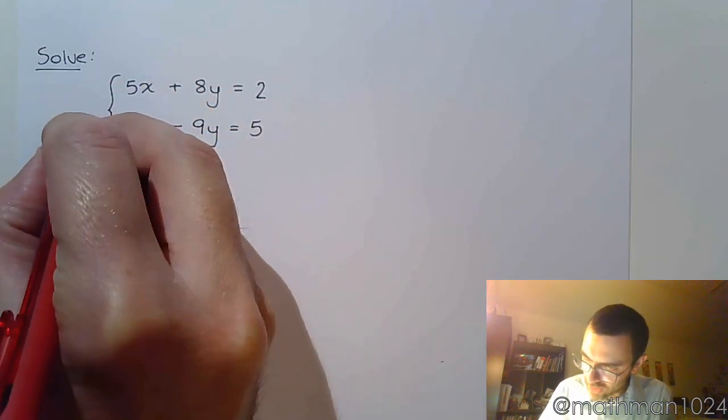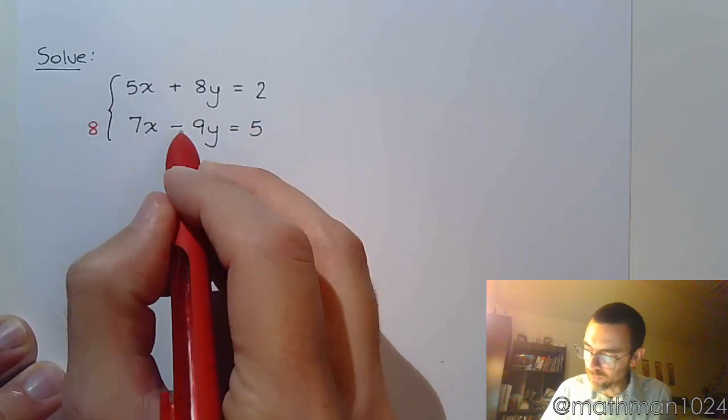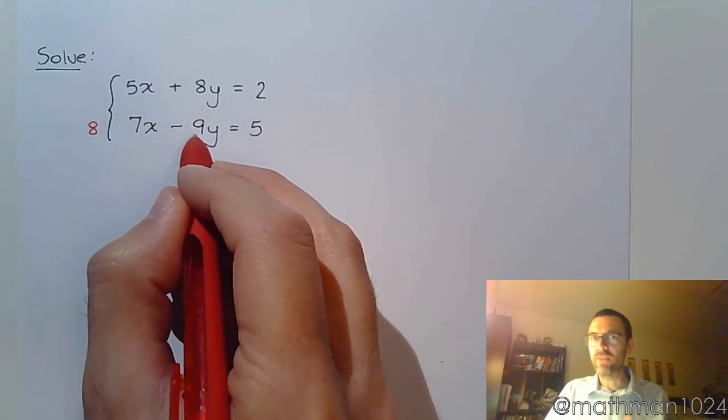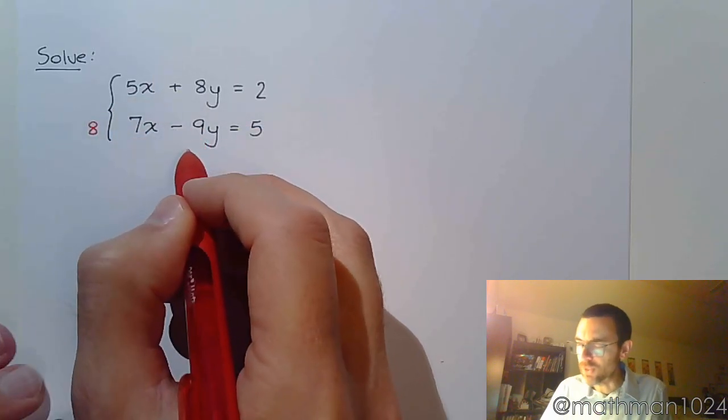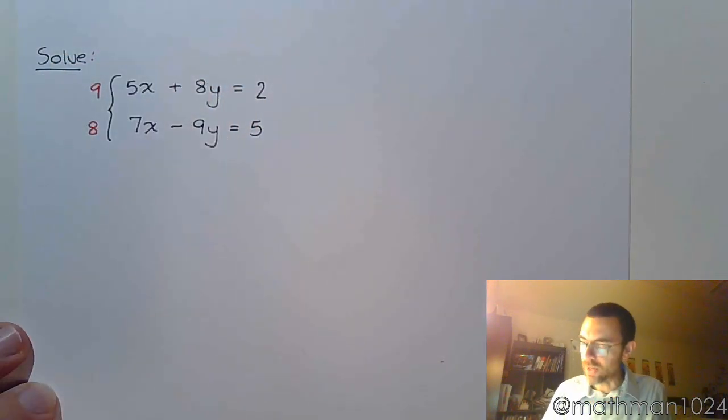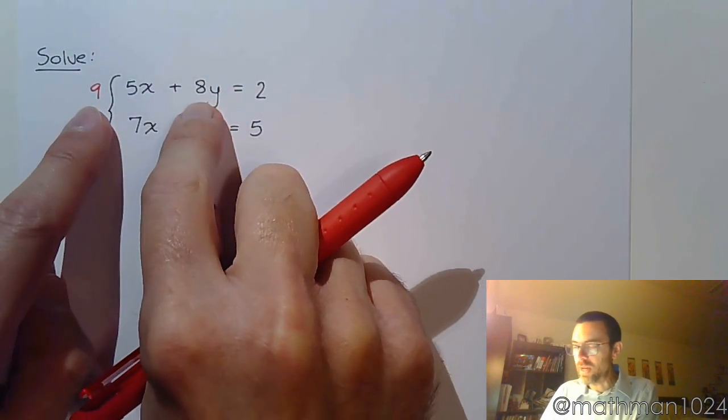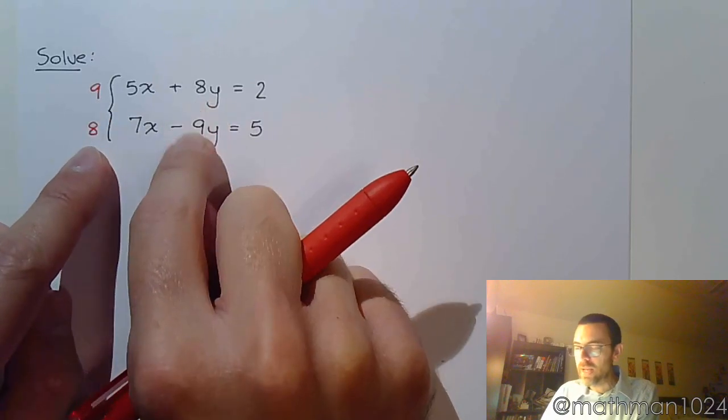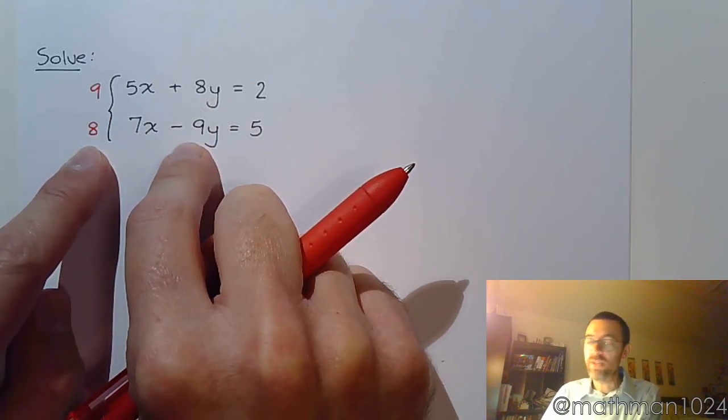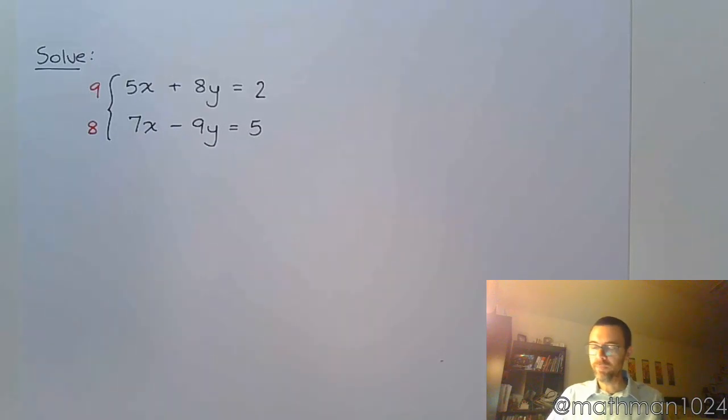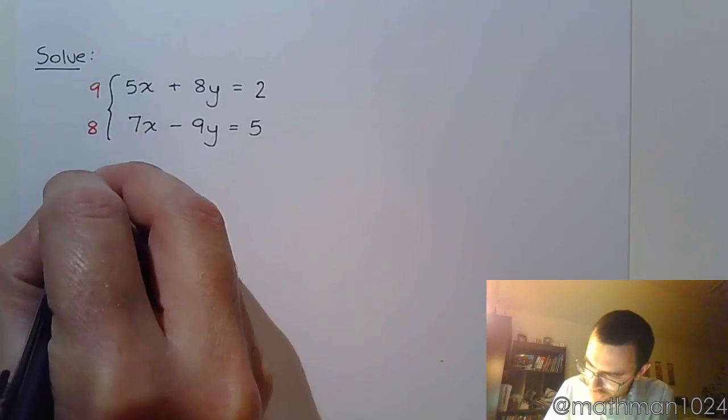Take this coefficient of 8 and multiply it times the second equation. Take the 9. Don't do the negative yet. Like do this without signs first and see what you get. And multiply the top equation times 9. So 9 times 8 is 72. 8 times negative 9 is negative 72. So these guys are going to go away. All right. So let's multiply this and see what we get.